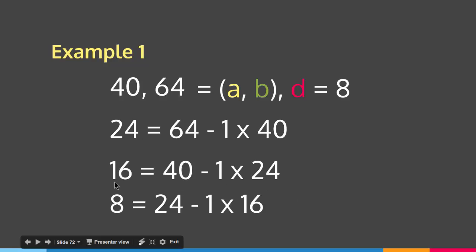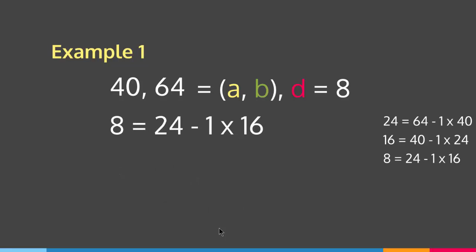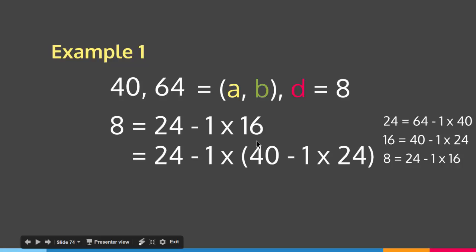Now we substitute these equations into the expression for 8. We take 8 equals 24 minus 1 times 16, and substitute 16 equals 40 minus 1 times 24. This gives 8 equals 24 minus 1 times (40 minus 1 times 24), which expands to 24 minus 40 plus 24.